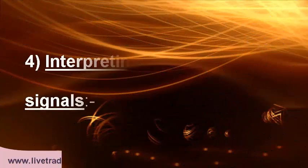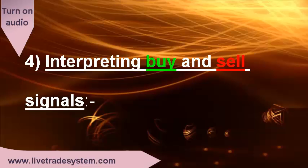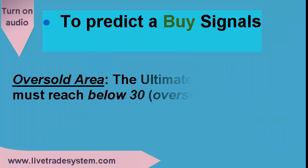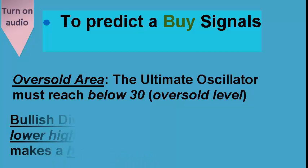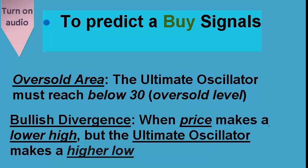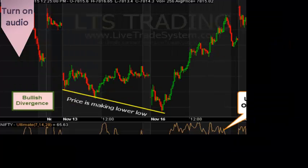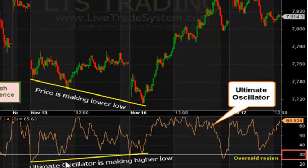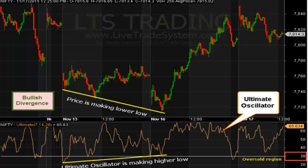Now we will understand how to interpret buy and sell signals with the help of the Ultimate Oscillator. To predict a buy signal, it is necessary that the Ultimate Oscillator must reach below 30 and a bullish divergence must occur — meaning the price makes a lower low but the Ultimate Oscillator makes a higher low. In this chart you can see the Ultimate Oscillator is below 30, and the price is making a lower low while the Ultimate Oscillator is making a higher low. This is termed as bullish divergence.